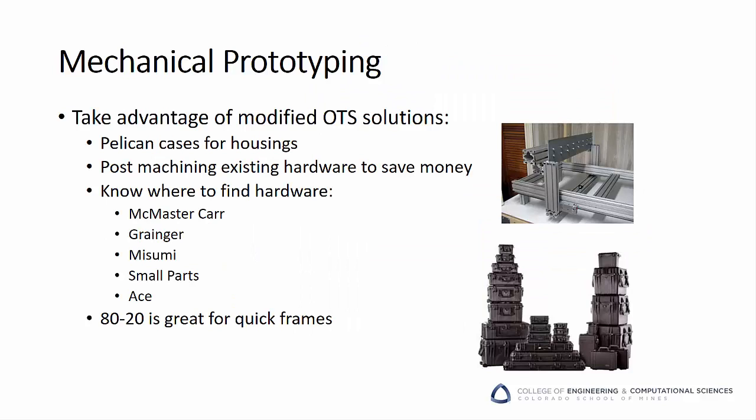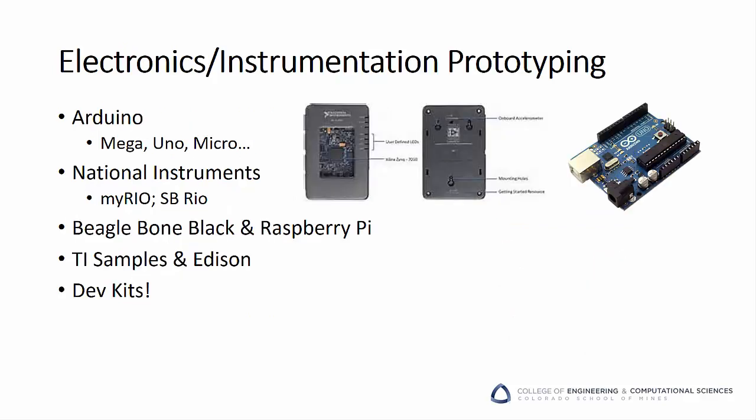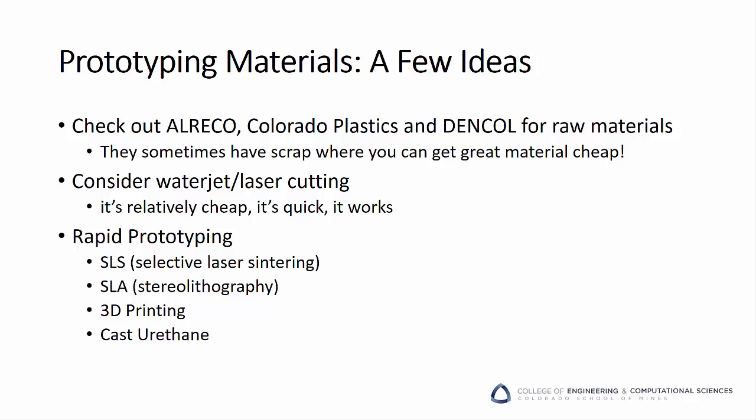As you begin prototyping your project, don't forget to take advantage of off-the-shelf or modified off-the-shelf solutions. Don't create custom housings unless required — consider project boxes or Pelican cases instead. Use resources like 8020 to quickly prototype support structures for custom equipment, and don't be afraid to post-machine existing hardware to make it an exact fit for your project. Similarly with electronics, don't underestimate the power of available development kits and prototyping tools like Arduinos and BeagleBones. That said, don't overestimate their capabilities either. Most solutions will require a combination of off-the-shelf solutions and custom circuitry, so plan accordingly. Also, don't get locked into the idea that everything must be hand-created or done via only processes available on campus.